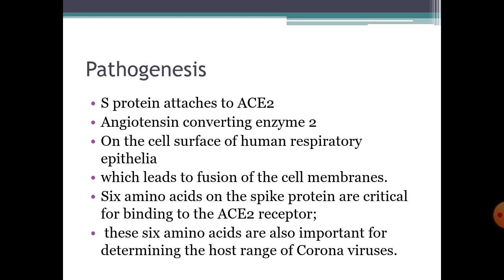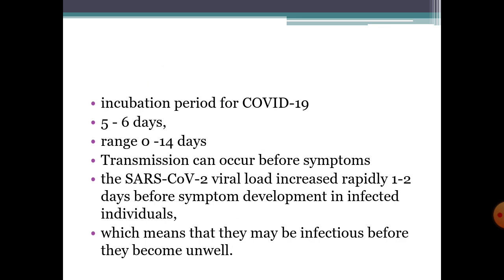Pathogenesis: infection begins when the spike protein attaches to the host cell receptor ACE2 — angiotensin-converting enzyme 2 — which is present on the human respiratory epithelial surface, leading to fusion of the viral envelope to the cell membrane. Six amino acids on the spike protein are critical for binding to the ACE2 receptor and for determining the host range. On entry into the host, the virus is uncoated and viral replication occurs. The incubation period for COVID-19 is on average 5 to 6 days.